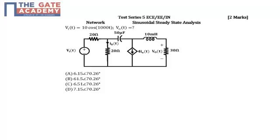Hello friends, this question is from test series 5 in the subject of networks and the topic is sinusoidal steady state analysis. It's a 2 marks problem. We have an RLC network with a dependent source and the input voltage is given as 10 cos 1000t. Operating frequency is 1000 and we have a capacitor and inductor.